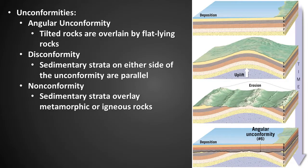What is an unconformity? An unconformity is a buried erosional or non-depositional surface separating two rock masses or strata of different ages, indicating that sediment deposition was not continuous. There are three main types of unconformities. An angular unconformity is where tilted rocks are overlaid by flat-lying rocks. A disconformity is where the sedimentary strata on either side are parallel to each other. A nonconformity is where sedimentary strata overlie metamorphic or igneous rock.